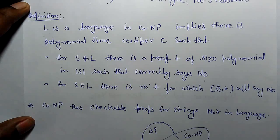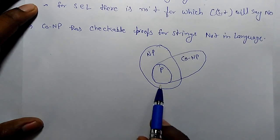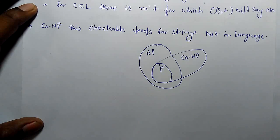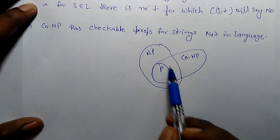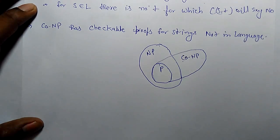Co-NP has checkable proofs for strings not in the language, which is the complement of NP. In the graph we can see if there is a problem that is solved in polynomial time, and some problems are non-deterministic polynomial time solvable. Co-NP would be some problems which may also be in polynomial time.